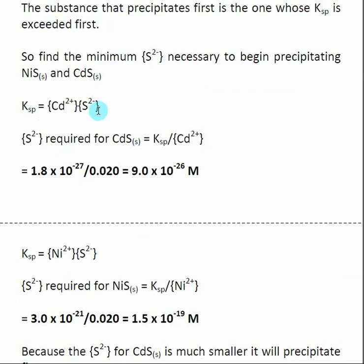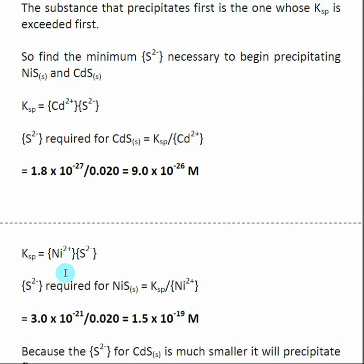For cadmium sulfide, we look at the solubility product and calculate the concentration of S²⁻ needed. With the KSP given and the concentration of Cd²⁺ given, we calculate the concentration of S²⁻ right at the edge of precipitation, which gives 9.0×10⁻²⁶. We do the same for nickel sulfide: with the KSP and [Ni²⁺] given, we calculate the concentration of S²⁻ right at the edge of precipitation, which gives 1.5×10⁻¹⁹.